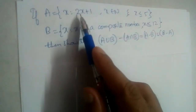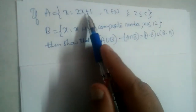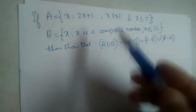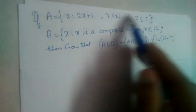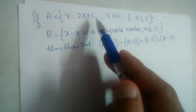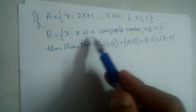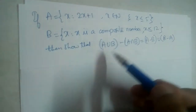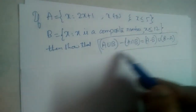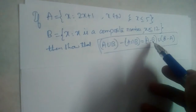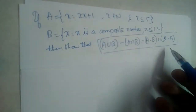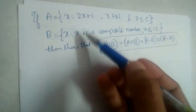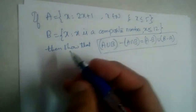Set A is given as x such that x equals 2x plus 1 and x is a natural number less than or equal to 5, in set-builder form. Set B is also given in set-builder form. We need to write both in roster form and prove that A union B minus A intersection B is equal to A minus B union B minus A.